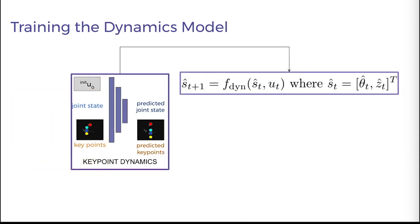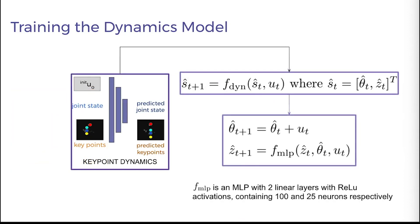The dynamics model has two parts: a component that integrates the current joint state with the actions to produce the next joint state, and a multi-layer perceptron that is used to predict the keypoints at the next step.